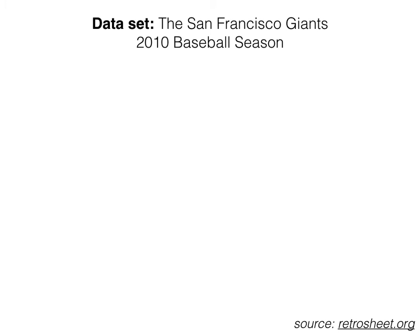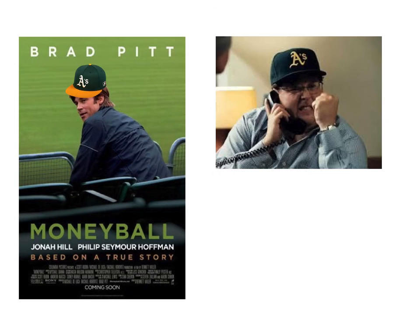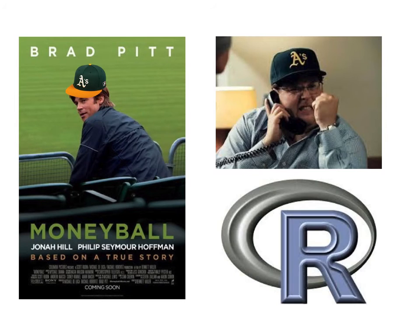The data set for today's lab comes from the 2010 San Francisco Giants. I downloaded the data from retrosheet.org, which compiles massive amounts of baseball data for analysis. You may know of the book or movie Moneyball. In the movie, Brad Pitt, playing Billy Beane, works for the A's. And he and Jonah Hill, playing Peter Brand, use statistics to create a great baseball team with very little money. And actually, to do this, they use the programming language R. So today, we get to be just like Brad Pitt and Jonah Hill. The only problem is I'm not an A's fan, I'm a Giants fan. So we'll be focusing on data from the San Francisco Giants instead of the A's.